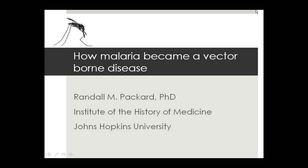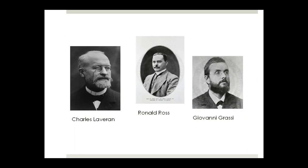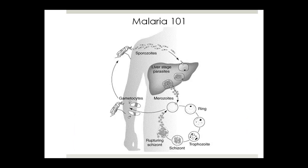The simple story begins with discoveries of Charles Laveran of the plasmodia that causes malaria, and the work of Ross and Grassi in determining the role of the Anopheles in transmitting malaria. And we get this, which makes it fairly obvious that if you can just eliminate those mosquitoes, you can stop transmission and you can prevent malaria from occurring.